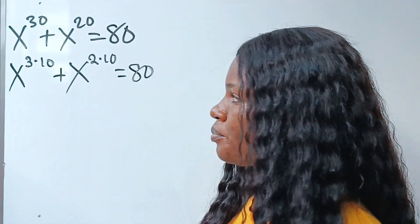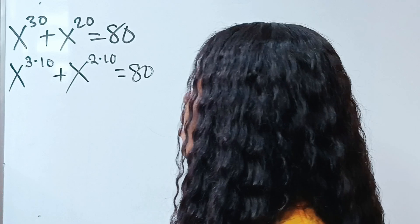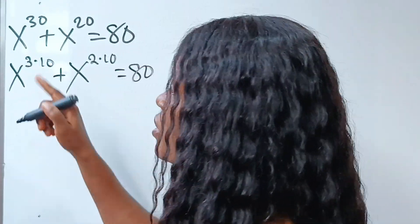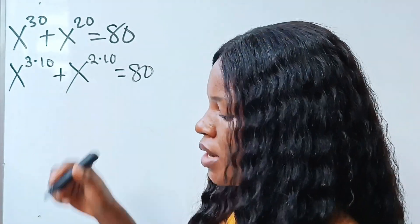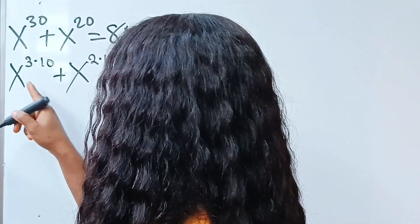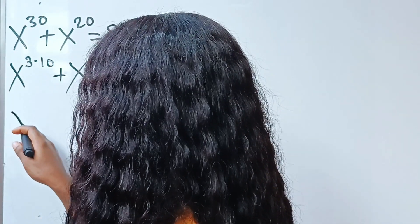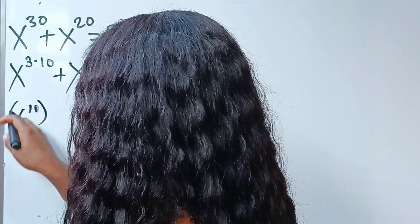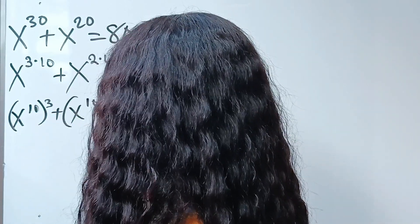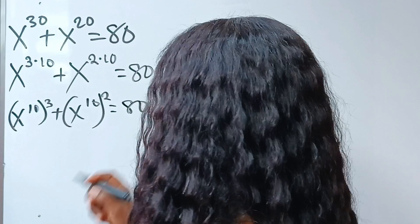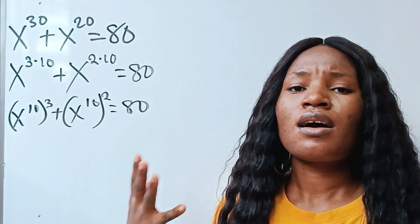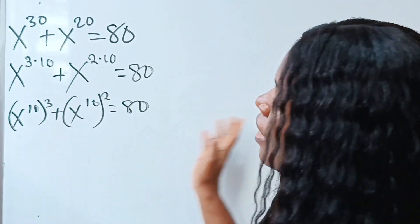That is equal to 80. Now, when you have two powers multiplying each other, you can bring one inside and leave the other as the outer power. So I can write this as x to the power of 10 raised to the power of 3, plus x to the power of 10 raised to the power of 2, is equal to 80.